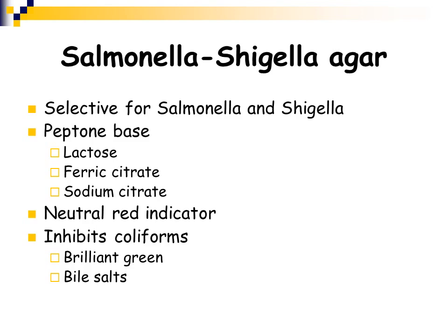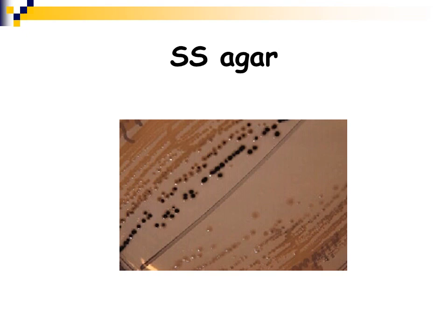SS agar is selective for Salmonella and Shigella. It is a peptone base with lactose, ferric citrate to detect hydrogen sulfide production, sodium citrate, and a neutral red pH indicator. It inhibits coliform bacteria — your normal intestinal flora — using brilliant green and bile salts. On SS agar, Salmonella, which is a hydrogen sulfide producer, will appear as a black-colored colony or have a black center.